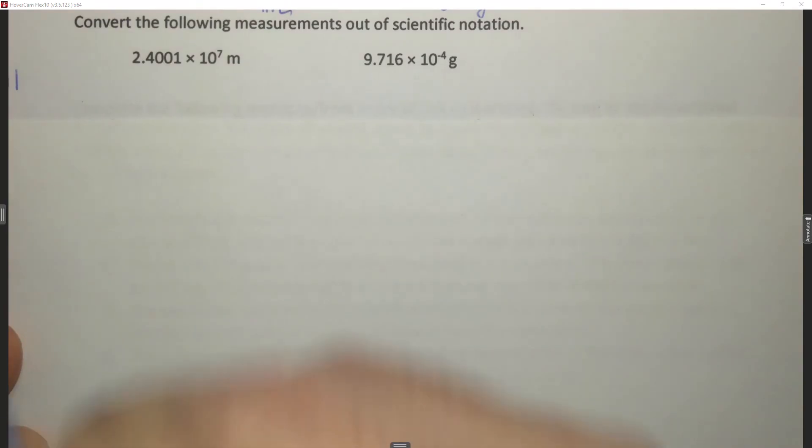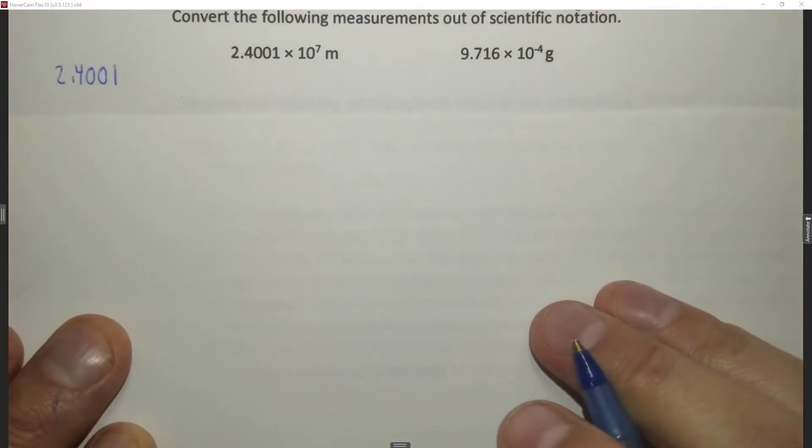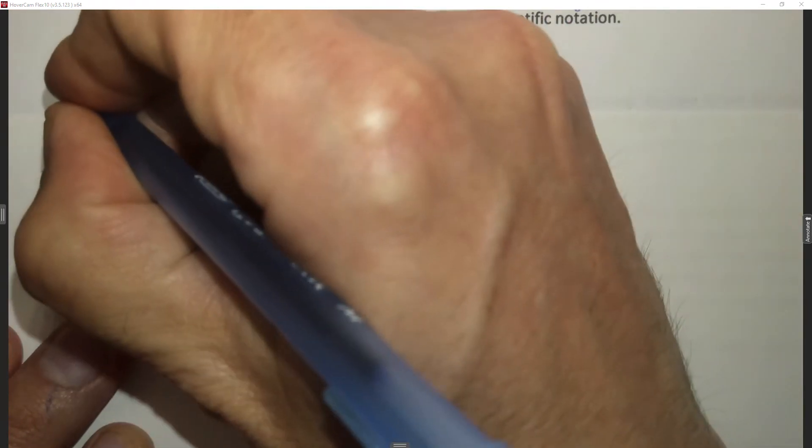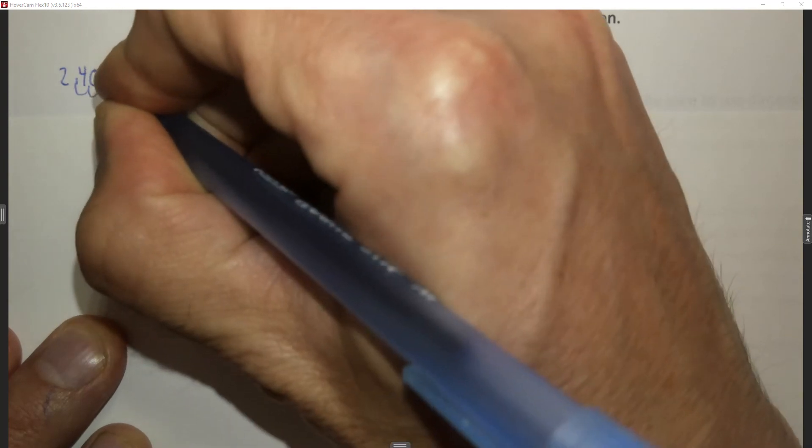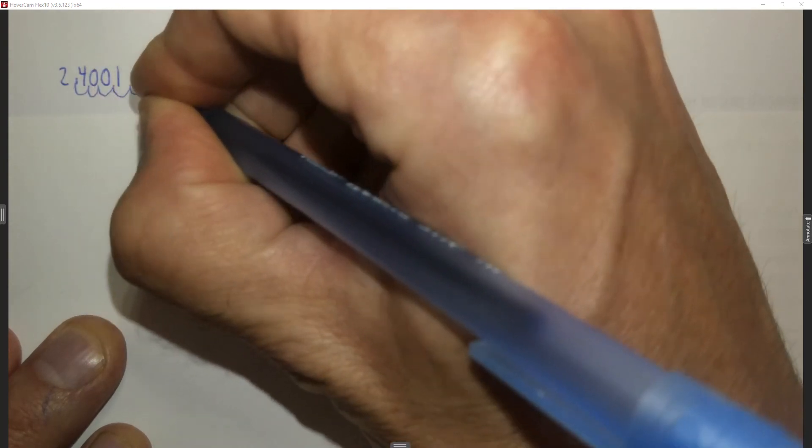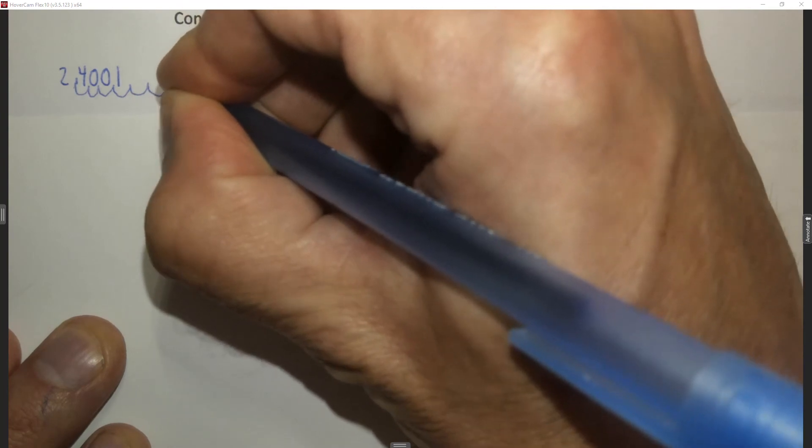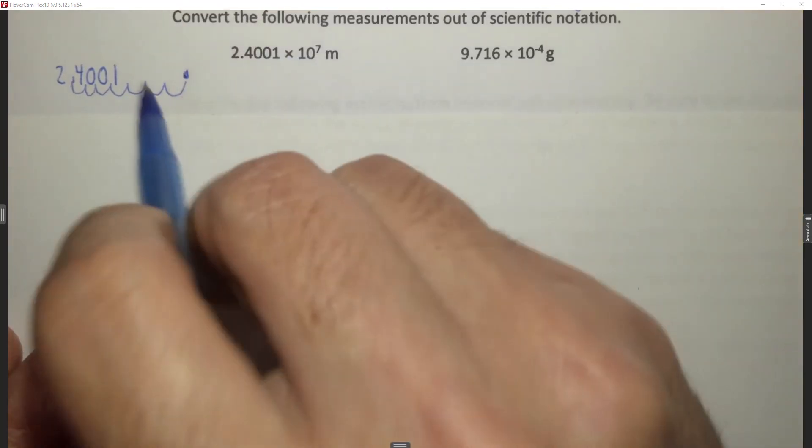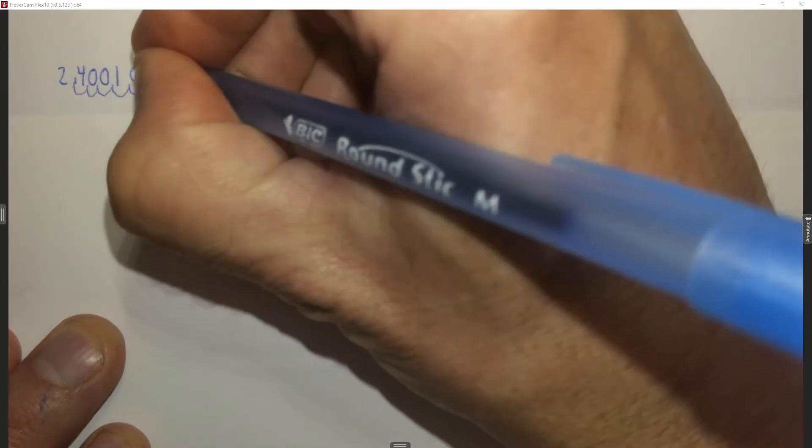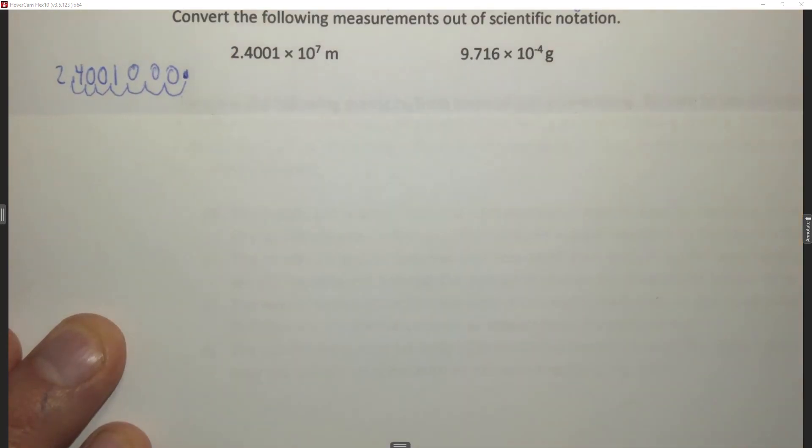Now I need to move the decimal place seven times. You can't see that let me move that over. So we have 1, 2, 3, 4, 5, 6, 7 times. Now you'll notice that here I don't have anything so I want to fill those in with zeros.